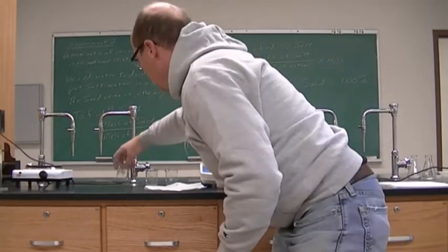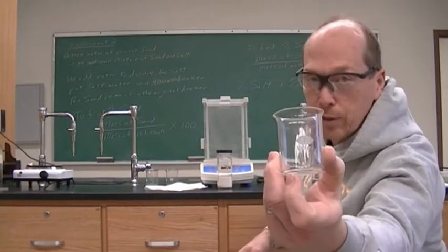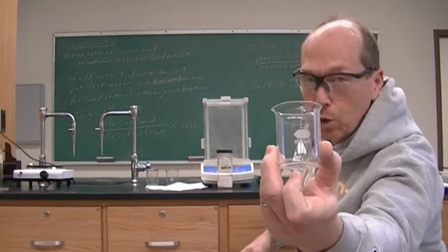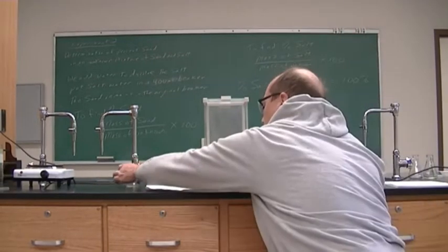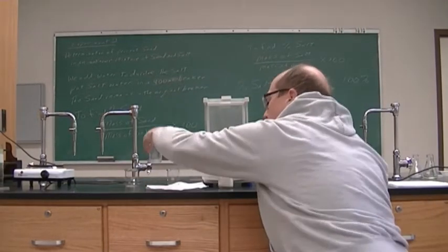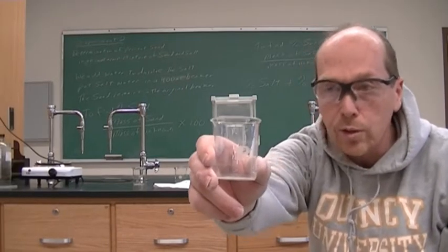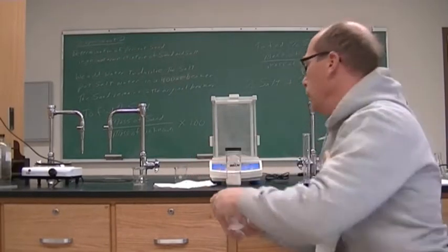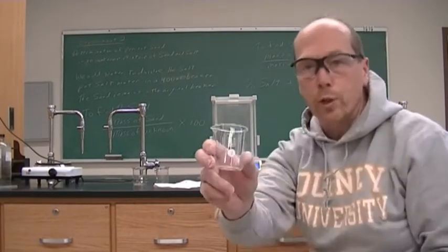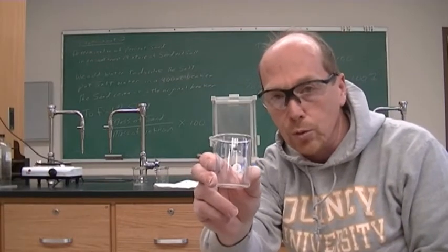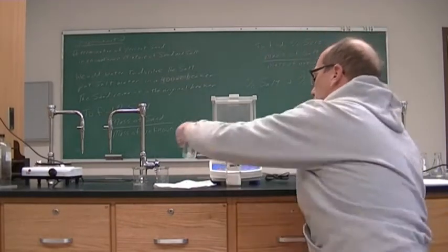I have three beakers and I have labeled them. This is beaker number one — in pencil I wrote a one. This is beaker number two — in pencil I wrote two. And this is beaker number three. It is very important to label your beakers to make sure you do not get them mixed up.